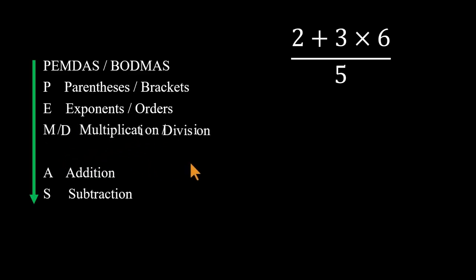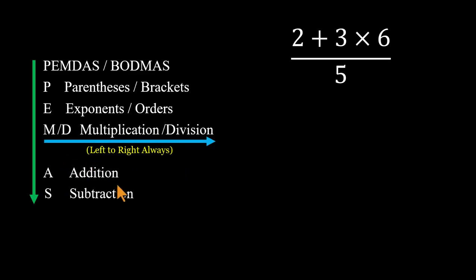Multiplication and division have equal priority, and so do addition and subtraction. We handle multiplication and division from left to right before touching any addition or subtraction. So in our expression, even though it starts with 2 plus, we don't add first, we multiply first.